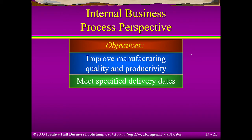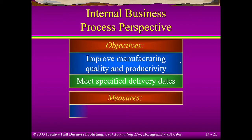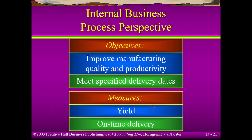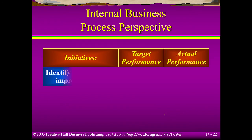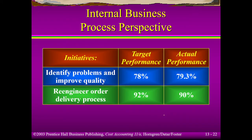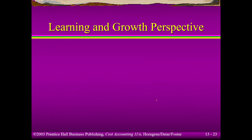In terms of the internal process objective, it's about processes — focus on what you're doing. The objective is to improve quality and productivity and be able to deliver. The measure is yield — output — and whether we are on time or not, because you have to match your measure with the objective. So looking at quality and productivity, you look at output; for delivery, you have on-time delivery. The actual performance with the engineered order plus delivery is lower than the target, so you have to go back and study again.